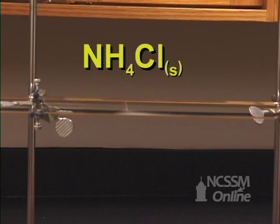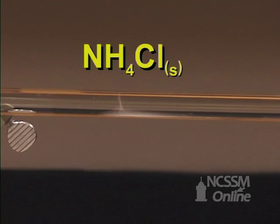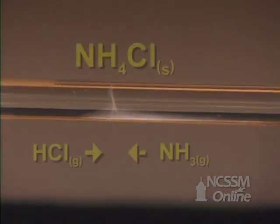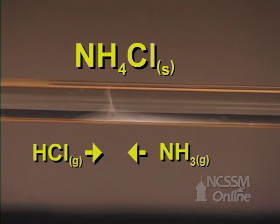We see that the white solid is closer to the HCl side than the ammonia side. This is because the ammonia has a lower molar mass and diffuses faster than the HCl.